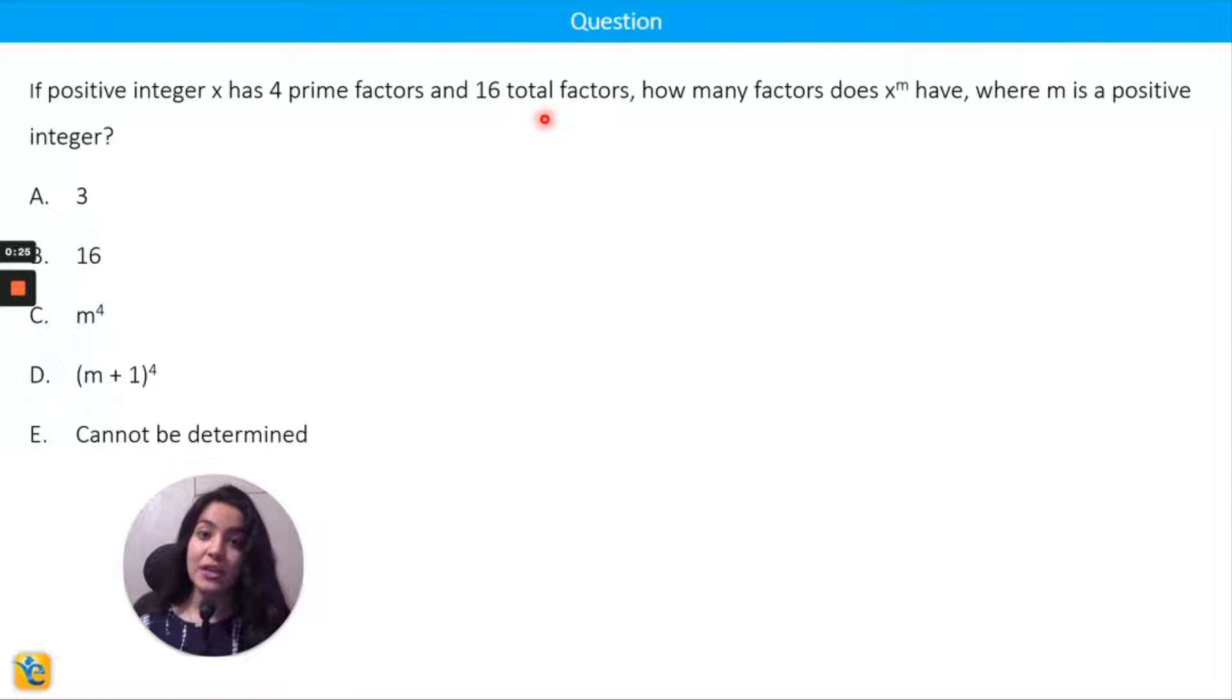Now with this information about x, these two pieces of information, I have to tell something about x to the power m, then how many factors that has. Let's see how we approach such questions. We'll use it piece by piece, everything given to us in the question. Let's take one bit and understand it.